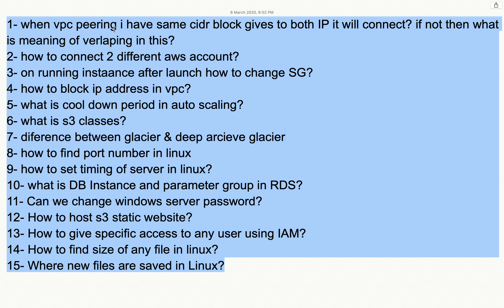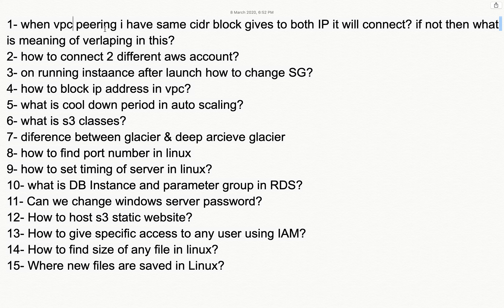The very first question was: when doing VPC peering, if the same CIDR block is given to both VPCs, will it connect? If not, what is the meaning of overlapping in this context? So if you have two VPCs with the same CIDR block, it will not connect, because AWS does not allow you to connect overlapping CIDR values.